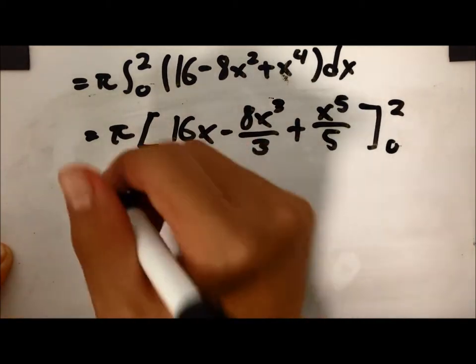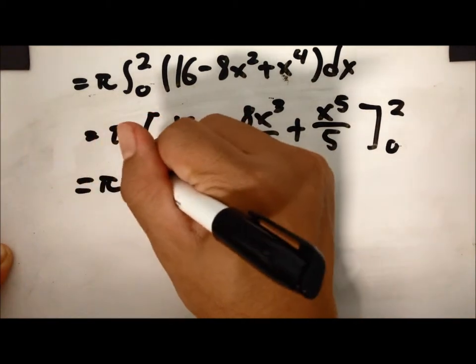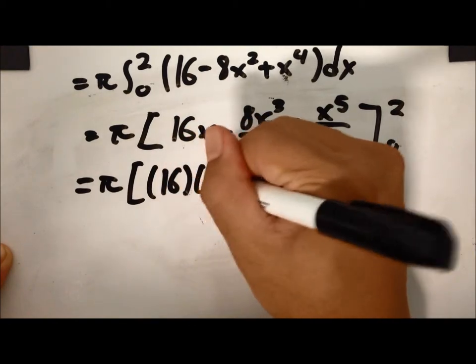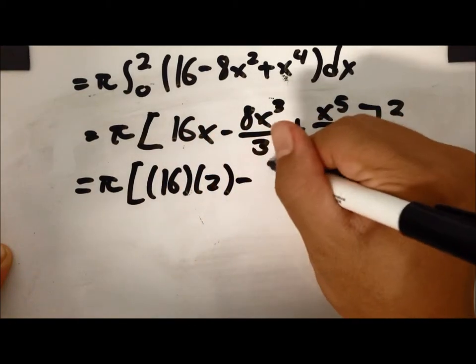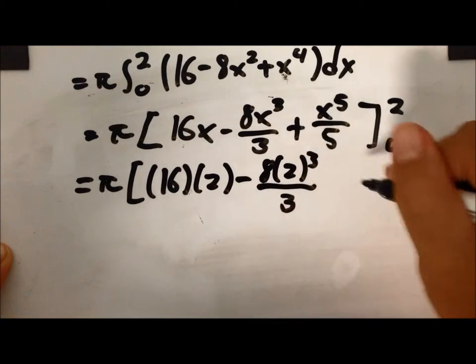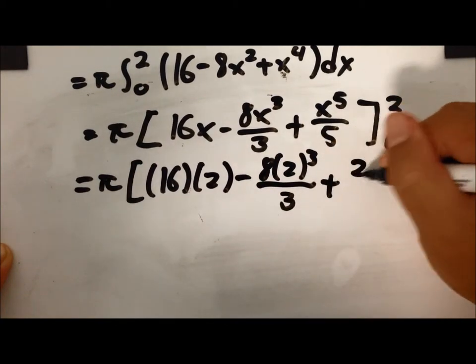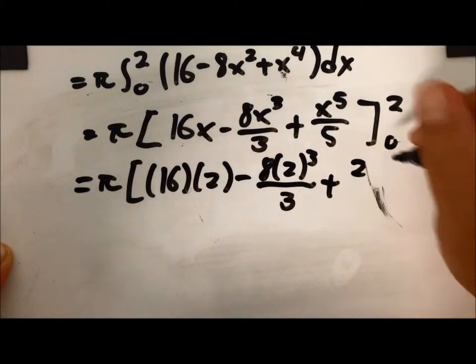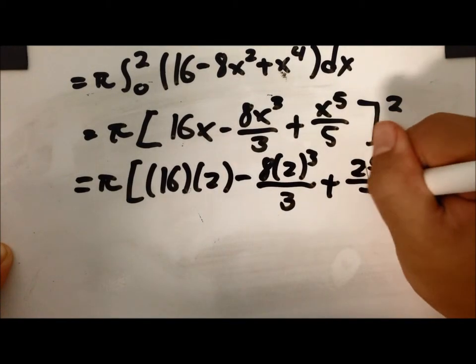Now we plug in our x values. So it should be 16 times 2 minus 8x cubed over 3 plus 2 to the power of 5 over 5.